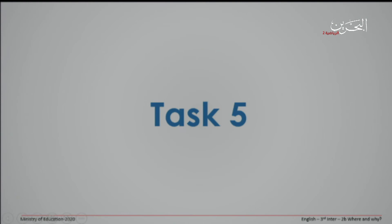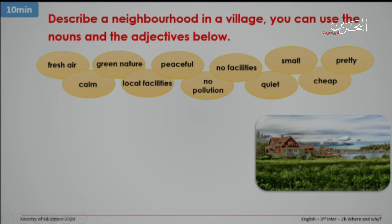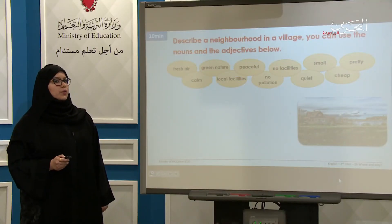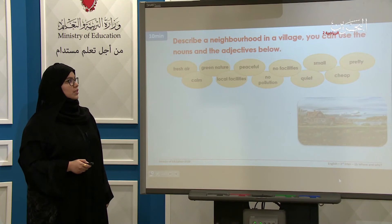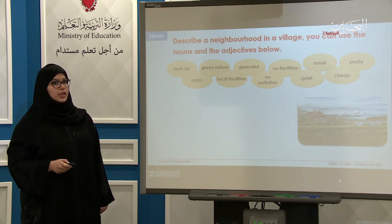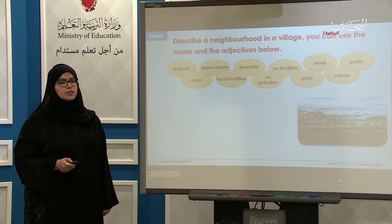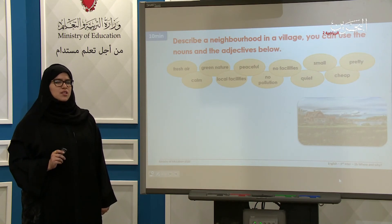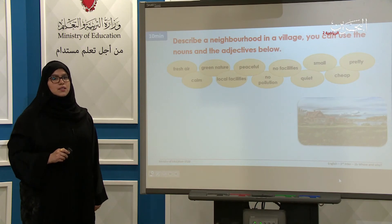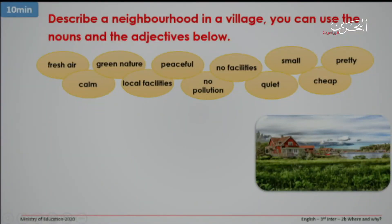We're going to describe a neighborhood in a village. You can use the nouns and adjectives below: fresh air, green nature, peaceful, no facilities, small, pretty, calm, local facilities, no pollution, quiet, and cheap. Look at the picture. You're going to describe a neighborhood in a village using these nouns and adjectives, and you have 10 minutes to do so.